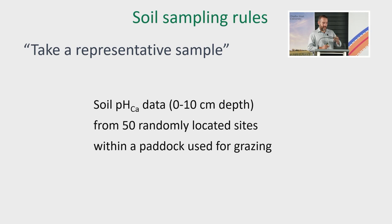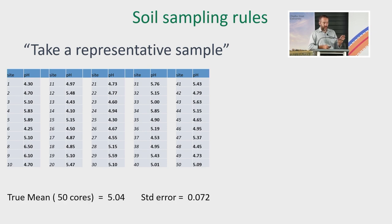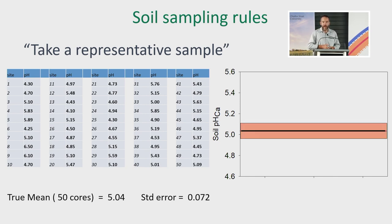This is soil pH data, 0 to 10 sampling from 50 randomly allocated sites within a paddock used for grazing — a uniform paddock. 50 cores randomly taken and bulked, just like you would if you were taking soil cores and bulking into one sample to send to a lab. The true mean of those 50 sites is about 5.04. On our Y axis we've got soil pH, and the mean is just over 5. There's error around that mean, and the absolute true mean fits within that pink band. Mathematically, the mean is that black line.